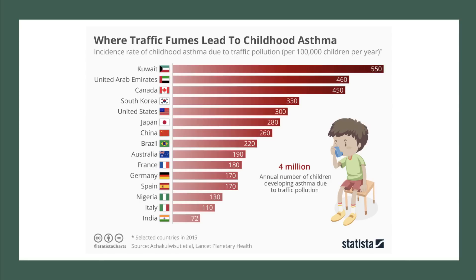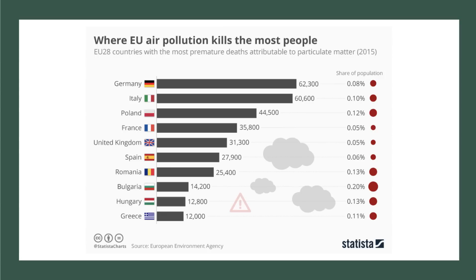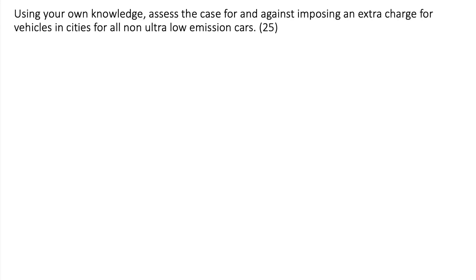A major study published in the medical journal Lancet found that four million children globally every year develop asthma as a result of air pollution from traffic. They're now estimating that the number of people killed from air pollution is greater than those attributable to the effects of smoking — 8.8 million compared to 7.2 million — arguing that air pollution is cutting an average 1.5 years of people's life expectancy. A big report by the European Environment Agency found over 400,000 premature deaths in the European Union in 2015, including over 30,000 in the UK, with particulate matter at high concentrations being the most common killer.